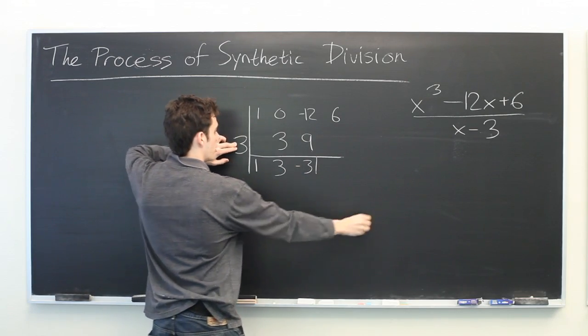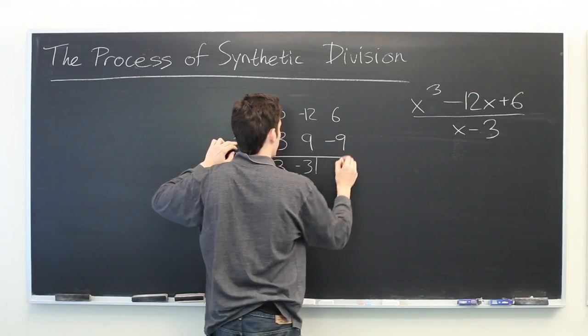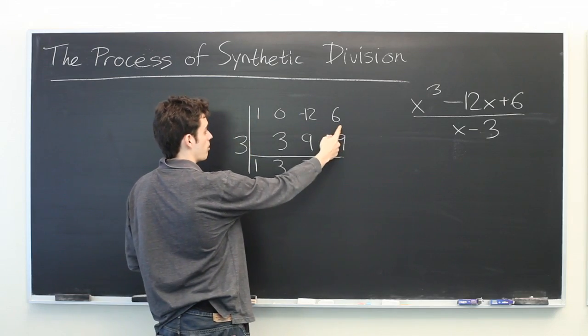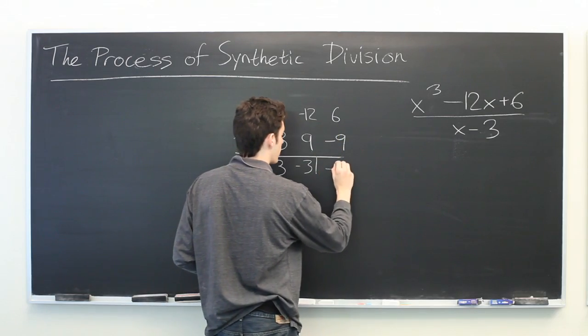3 times minus 3, minus 9. And again we perform addition. And once again we get negative 3.